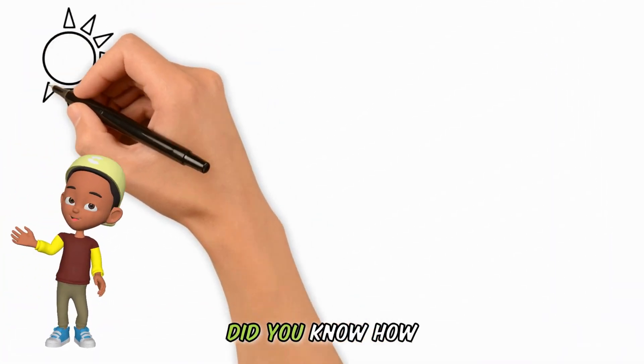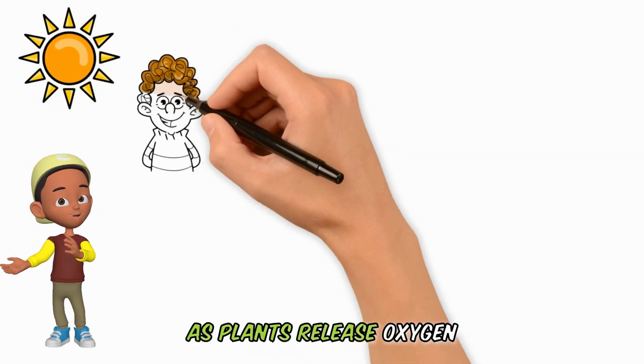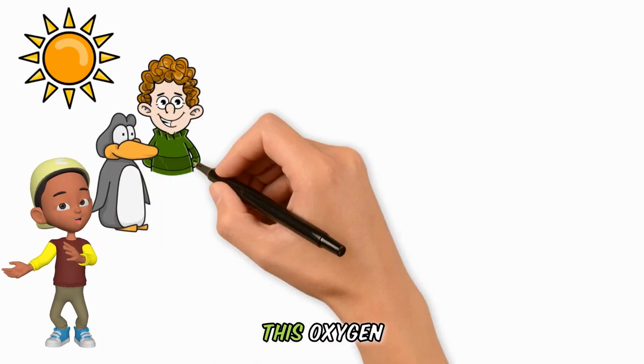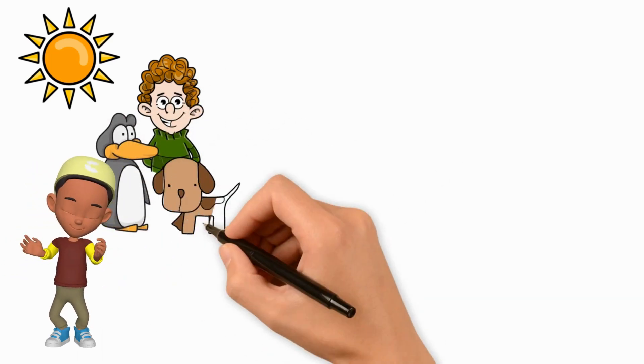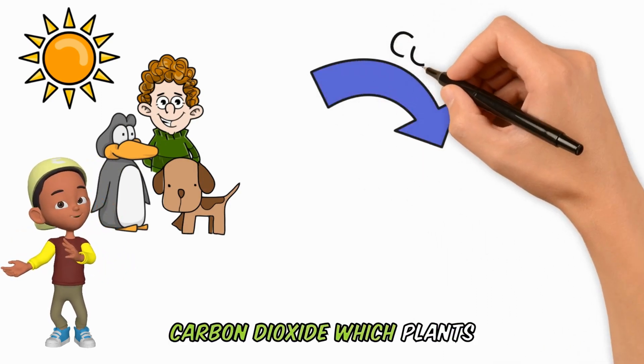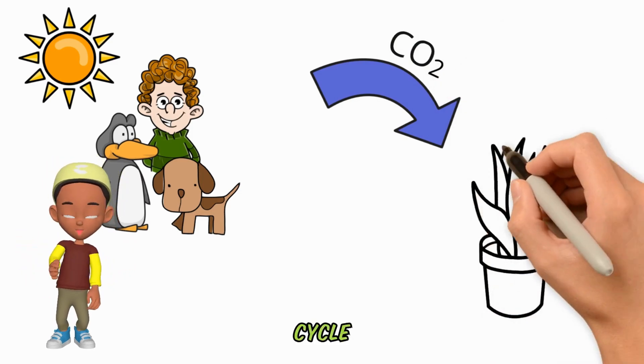Here's a fun fact. Did you know how important plants are to animals? As plants release oxygen into the air, animals, including humans, breathe in this oxygen. In return, we exhale carbon dioxide, which plants then use during photosynthesis. It's a perfect natural cycle.